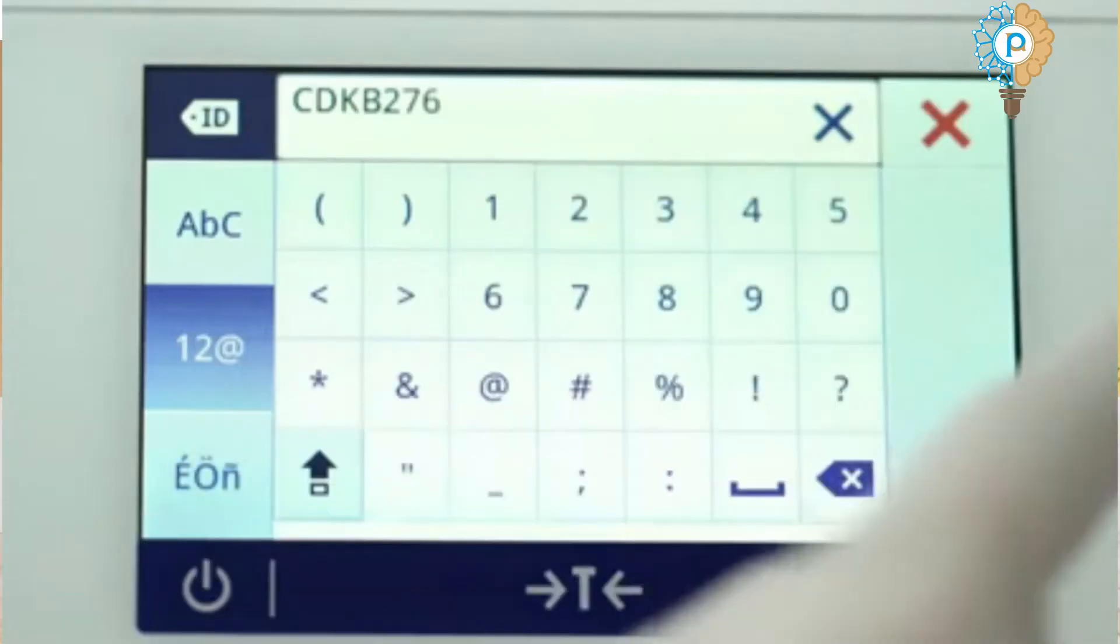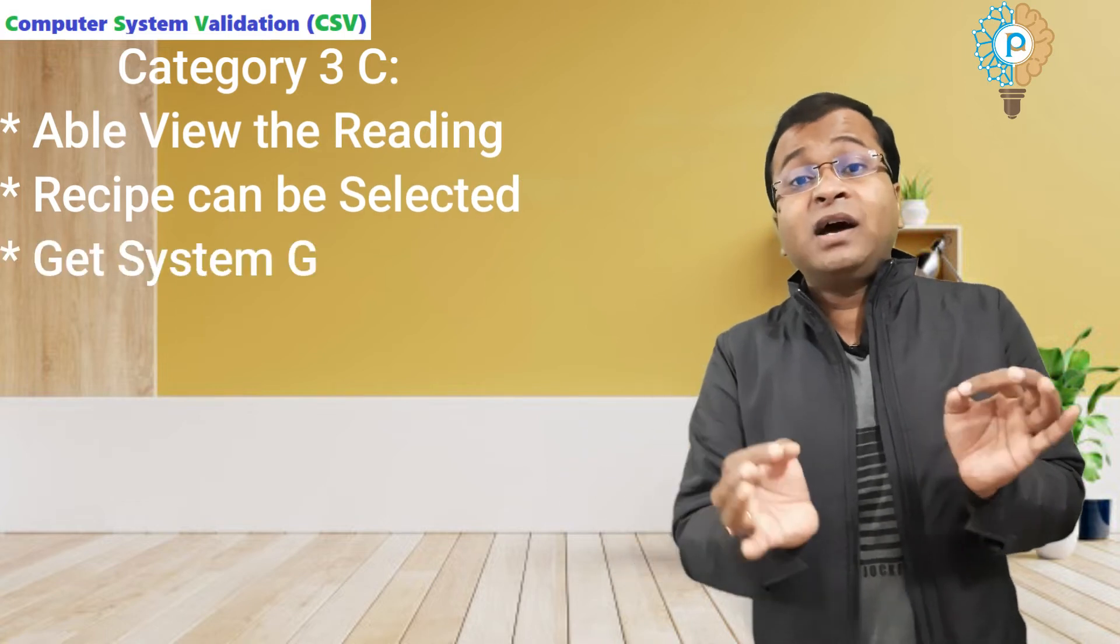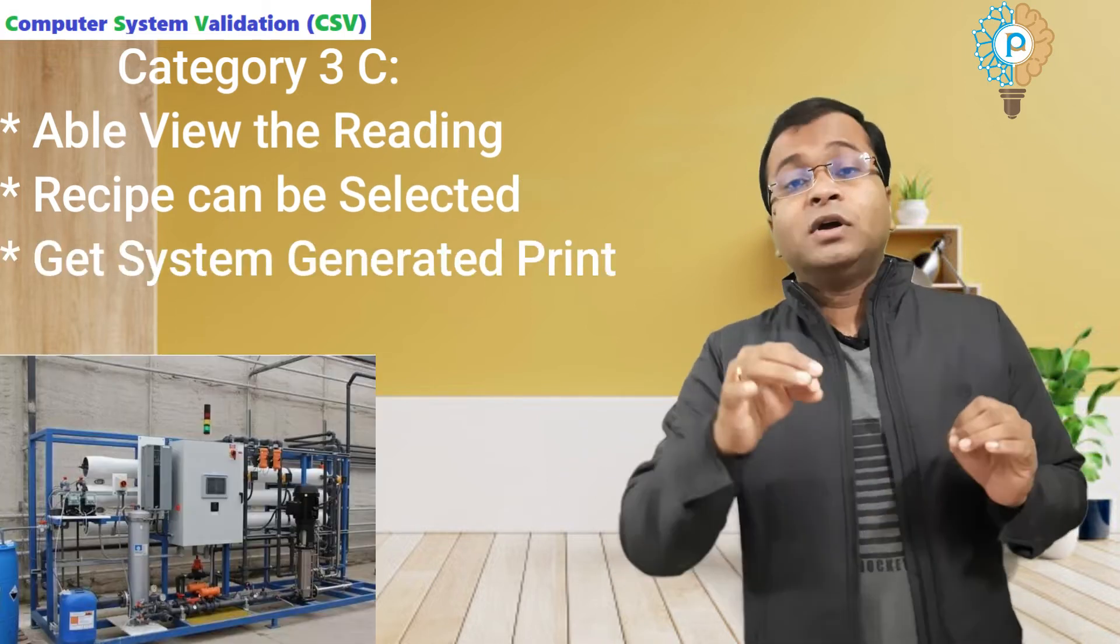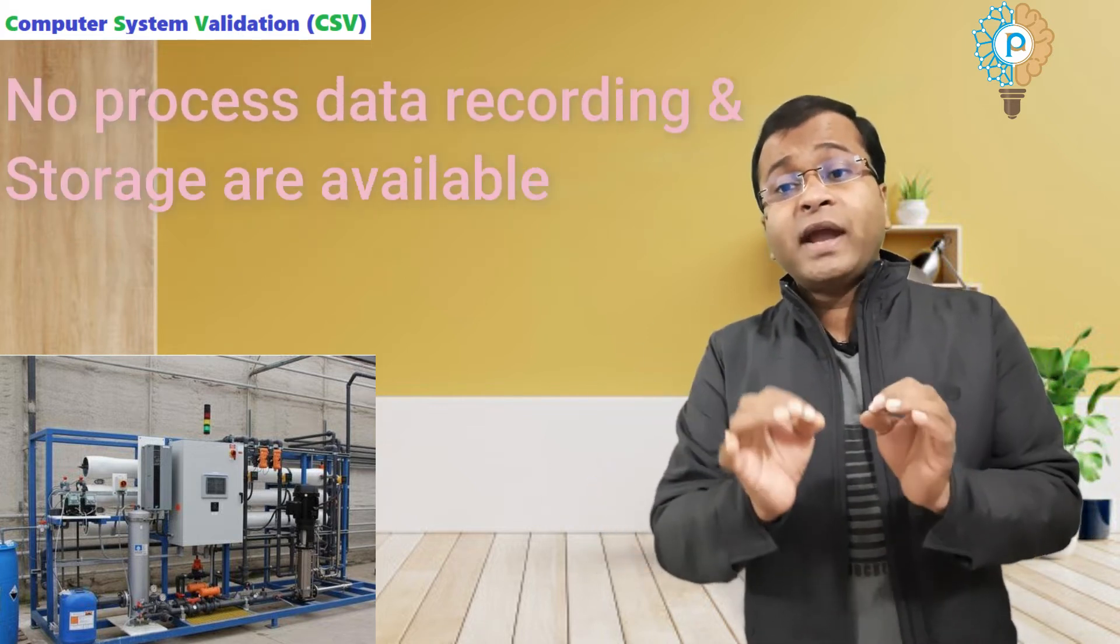In Category 3C, you can view the reading, recipe can be selected, and you can get the system-generated print, like a raw water system generation. Here, no process data recording and storage are available.